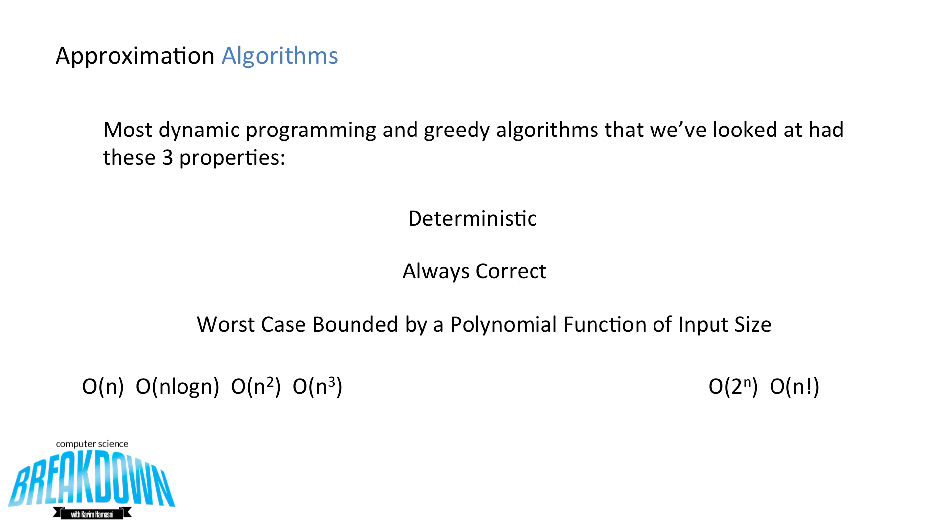These problems are extremely difficult to actually come up with a solid answer in a reasonable amount of time. So of the three properties listed above, we want to relax one of them so that we can come up with a good enough solution, not necessarily the optimal solution, in order to solve the problem in a fast enough time. So we're going to relax condition number two, the always correct. We're going to come up with an approximation solution as opposed to the optimal solution.